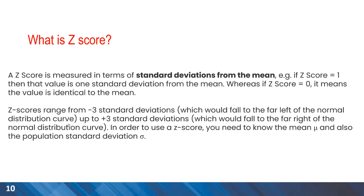What is the z-score? It is a measure of standard deviations from the mean. A z-score of 0 means the value is identical to the mean. A positive value of 1 means we are one standard deviation to the right-hand side of the mean. The z-score can range between negative 3 to positive 3.